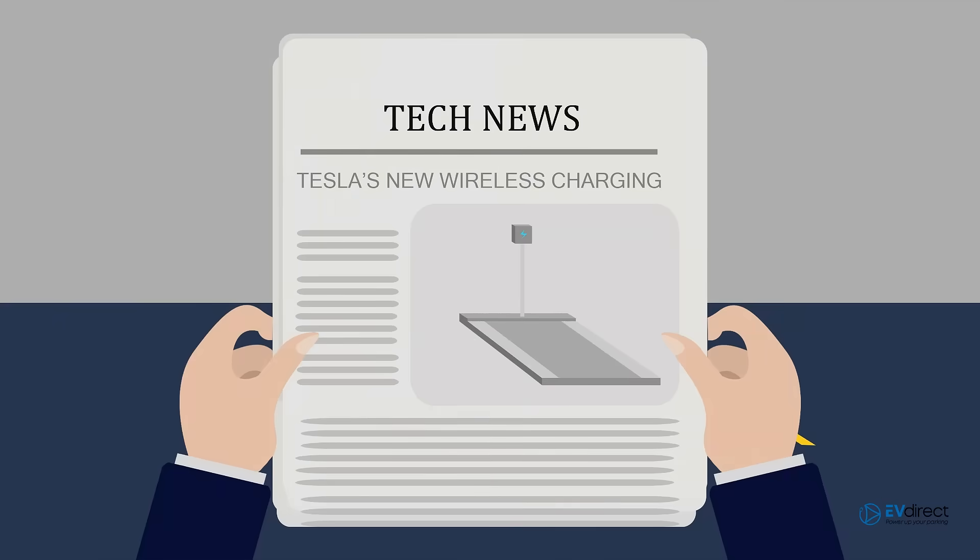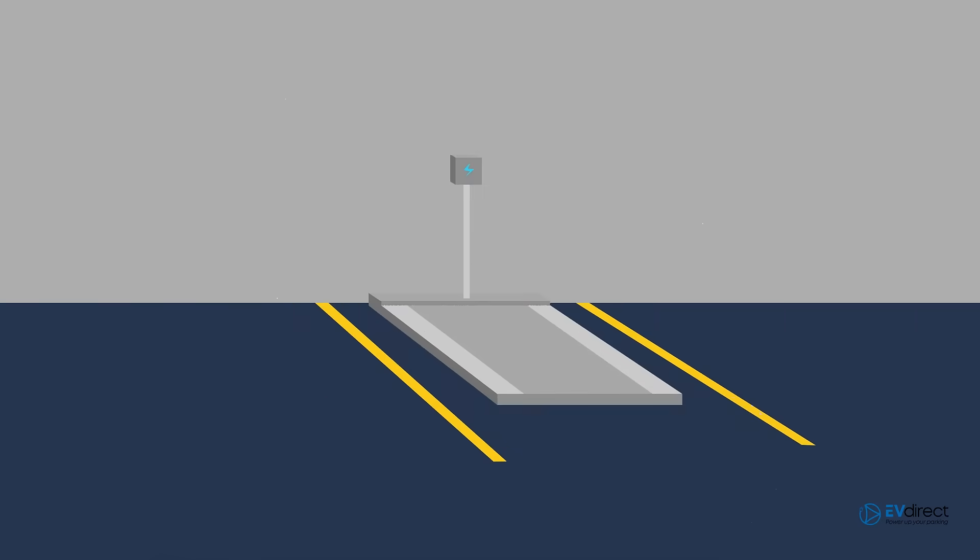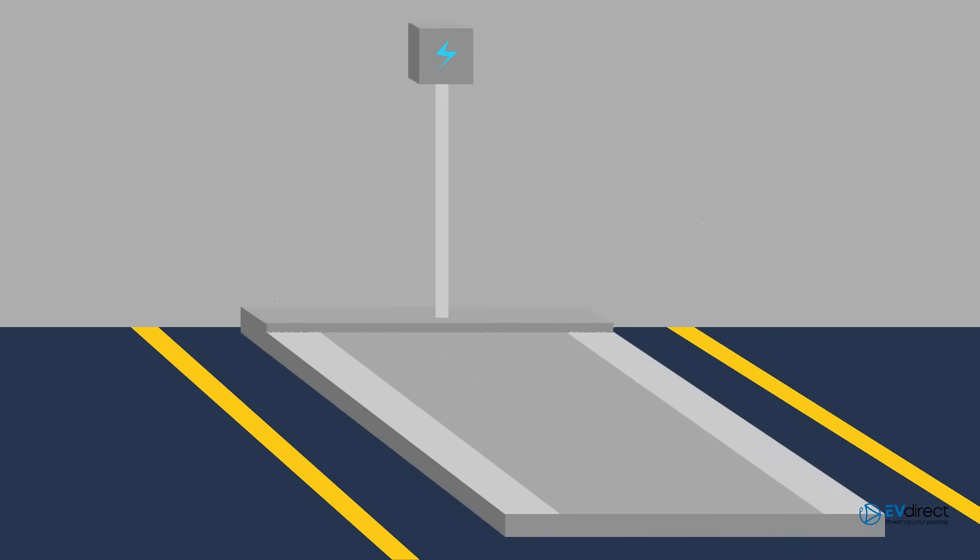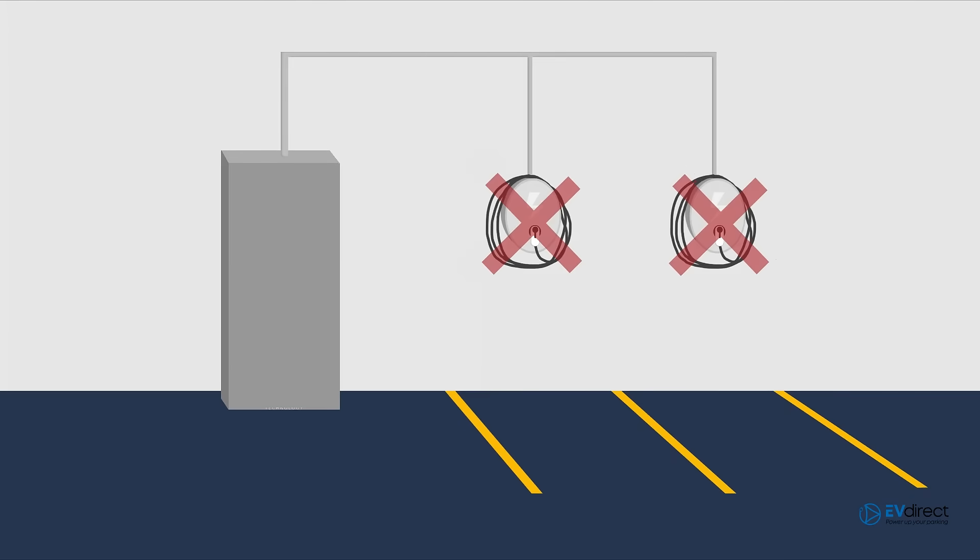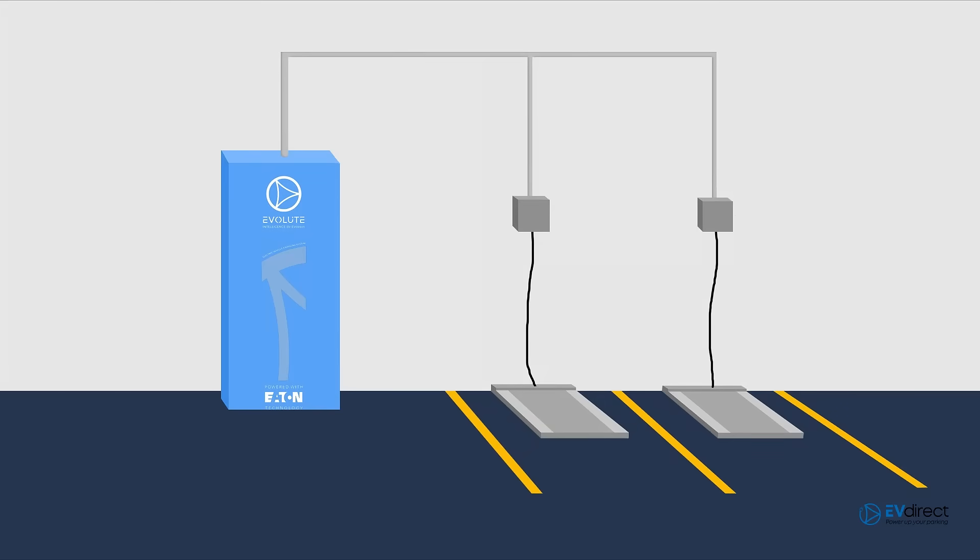This benefits you now and in the future. As technology advances and new methods of charging are released, network systems will need to be replaced with new and modern equipment, which can be awfully expensive. You could find yourself stuck with old technology. However, the Evolute is adaptable and will allow you to easily swap your end-of-line device to whatever device the future holds without hassle.